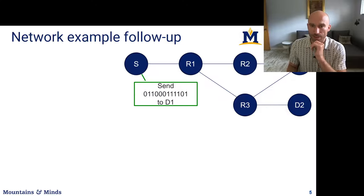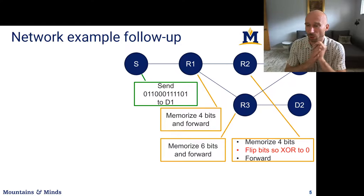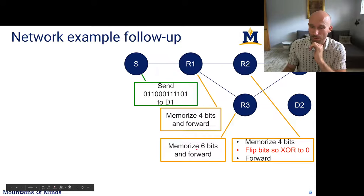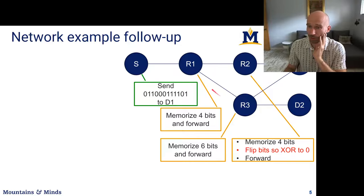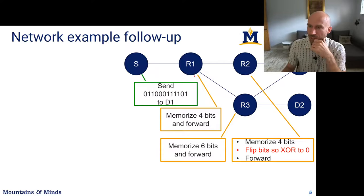The task was for the source to send some bits to destination D1, but the source doesn't know where D1 is — it only knows it's connected to router one. Each router got its own instructions: router one had to memorize four bits then forward the data, but router six had to memorize six bits. Right away we have a disagreement in the protocol — they haven't standardized it, so they're all running their own thing. They need to negotiate how many bits actually form a packet before forwarding data.